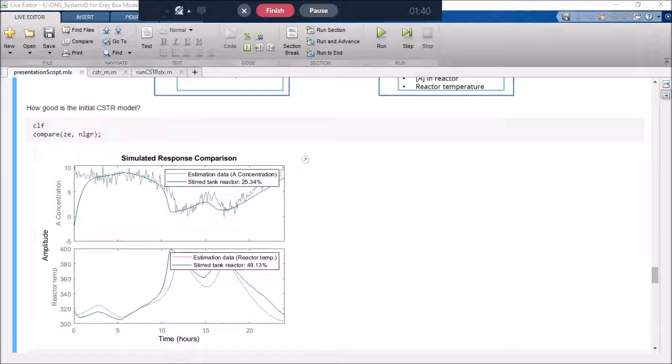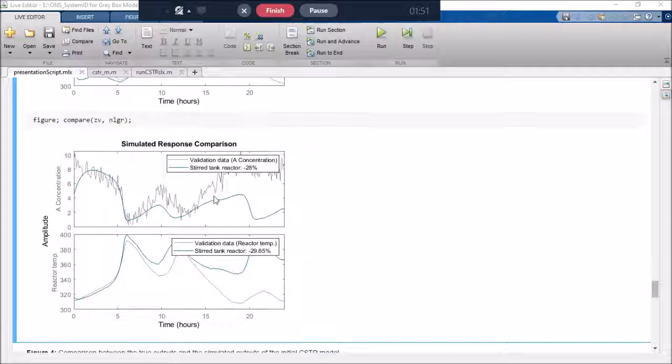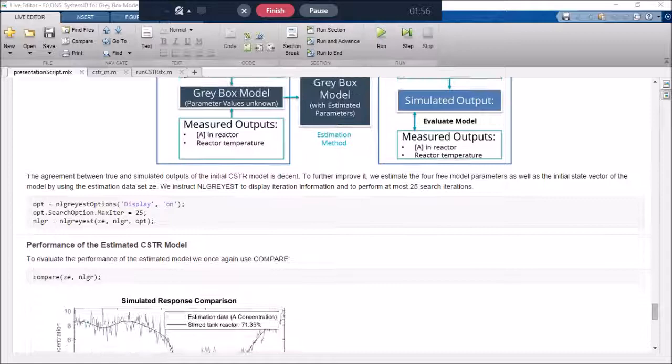Then we can compare our initial CSTR model with estimation data. We can see that it compares reasonably well. But with our validation data, it starts to deviate after 15 hours.